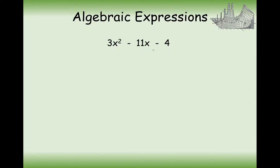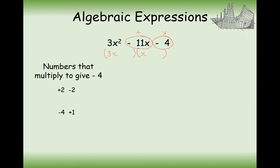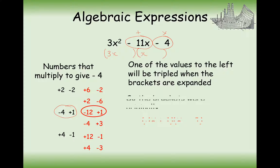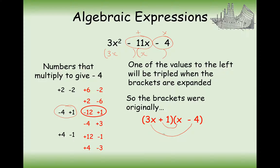Let's have a go at one more because these are pretty tricky. We need to times together to make minus 4, but this time one of them is going to have to be tripled, then the other stays the same and they add to make minus 11. Pairs of numbers: 2 and minus 2, or minus 4 and 1, or 4 and minus 1. In this case it's going to be minus 12 and 1, so we triple the minus 4 — that needs to go in the other bracket to the 3. So 3x times minus 4 makes minus 12x, and 1 times x gives us x, making minus 11x total. That's our minus 11x.